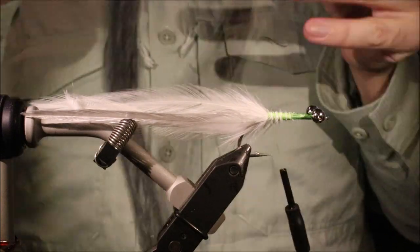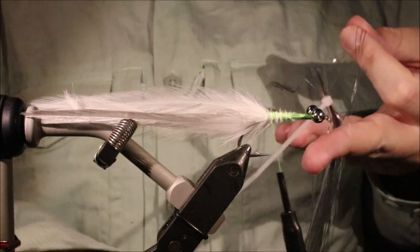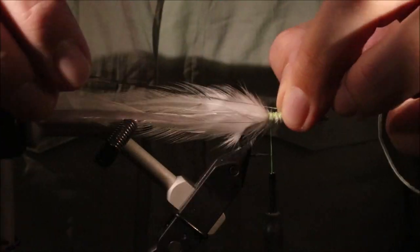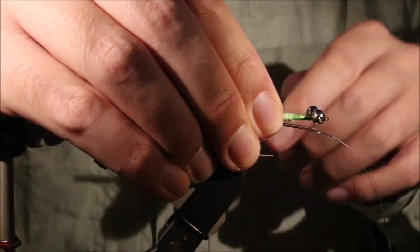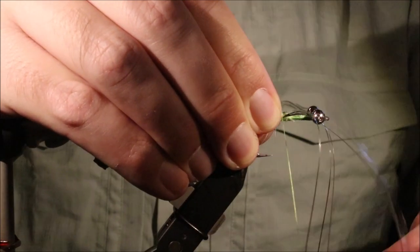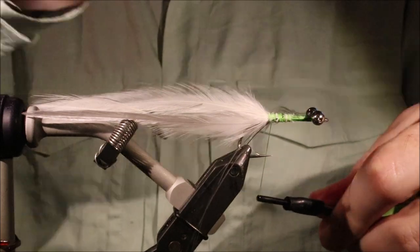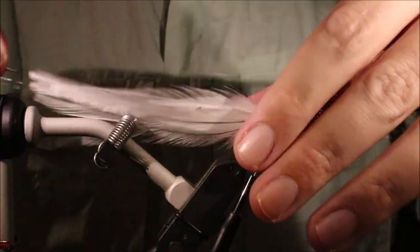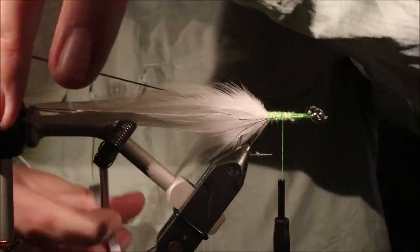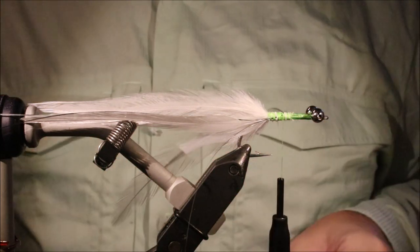I've got a bit of flash. I'm just using silver flash, plain flashaboo. Use whatever you like. Silver or pearl flashaboo is probably as good as anything else. I'll tie it down on one side. Fold it over, and have it down the other. I like the flash on the outside of the feathers. And I'll just trim away the waste. Just slightly longer than the feathers.